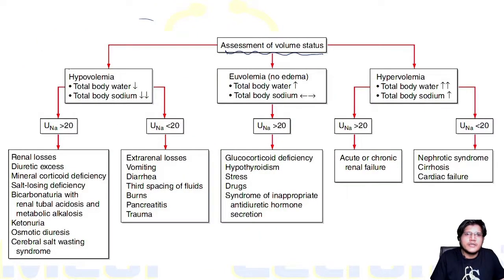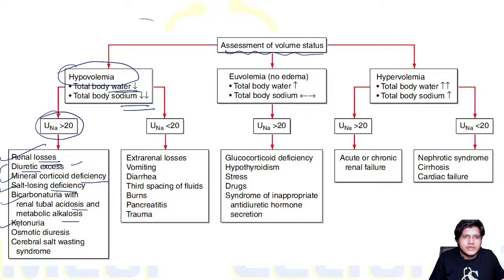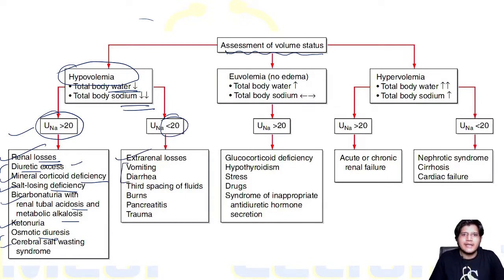In hypovolemia there is decreased total body water along with decreased total body sodium. Urinary sodium more than 20 indicates renal loss, which can be due to diuretics, mineralocorticoid deficiency, salt-losing defects, bicarbonate loss with renal tubular acidosis, metabolic alkalosis, ketonuria, osmotic diuresis, or cerebral salt wasting syndrome. If urinary sodium is less than 20, these are extra-renal causes: GI losses like vomiting and diarrhea, third spacing, burns, pancreatitis, and trauma.